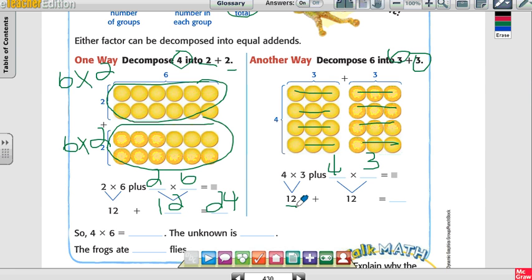4 times 3 is 12, plus 4 times 3, which is 12. And 12 plus 12 is? 24. So 4 times 6 is? 24.